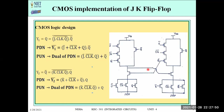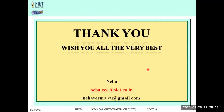This is how we implement the JK flip-flop using CMOS logic design. To summarize: for any CMOS logic design, calculate the Boolean expression, derive the pull-down network, derive the pull-up network, implement PDN using NMOS, implement PUN using PMOS, and combine all common inputs. This approach can be used to design CMOS logic for any circuit. This concludes the CMOS logic design for the D flip-flop and JK flip-flop. Post your questions in the comment box. Thank you.